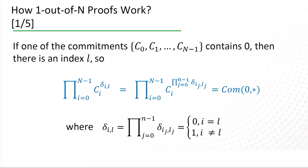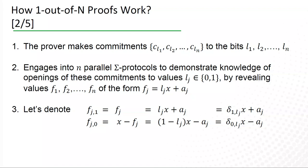And assuming that the number n is the power of two, we can write these indexes i and L in binary, and we can reformulate what we want to prove as the product of C i to the product of delta i g lg being a commitment to zero. Does this make sense? Okay. So, the prover starts by making commitment to his index L, so making commitments CL1, CL2, CLn to the bit values. And next, it engages into n parallel sigma protocols to demonstrate the knowledge of opening of these commitments to be bit binary values to LG equal to either zero or one.